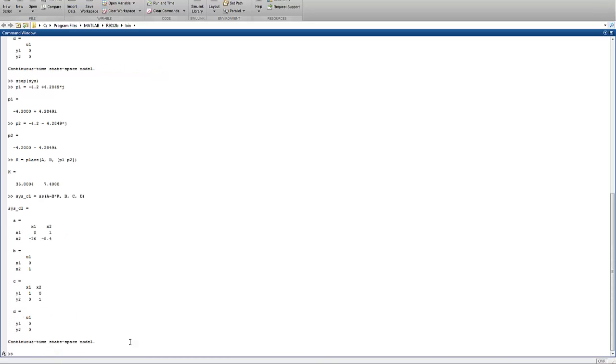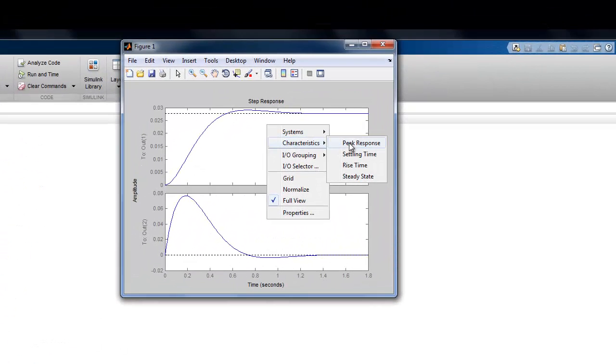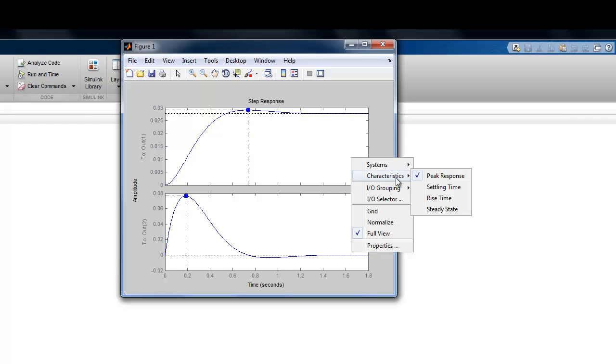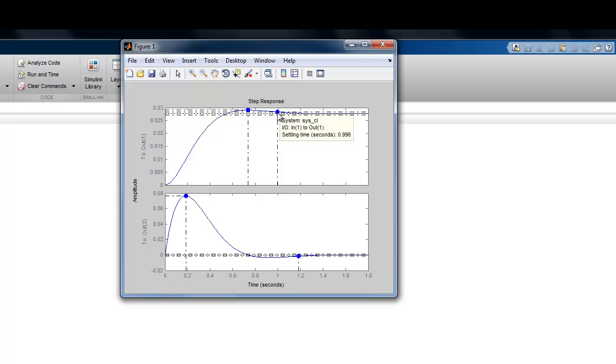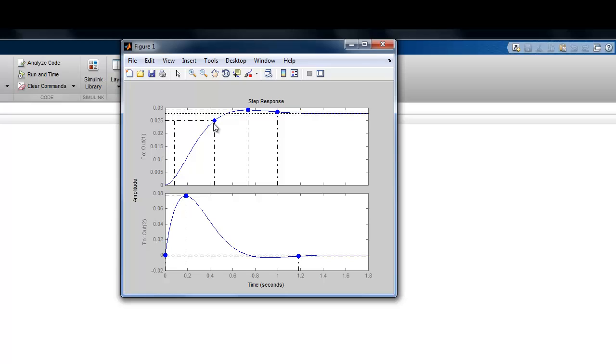There's our closed loop. When we type step of SysCl, we get the following step response. If we get our peak response, we have less than 10% overshoot. If we look at our settling time, it's now just less than one second, and our rise time is significantly below half a second. We've met our performance criteria.